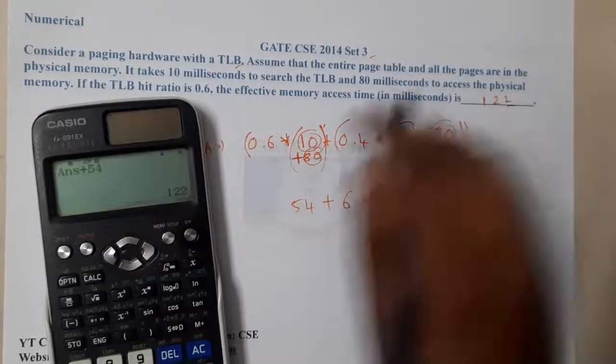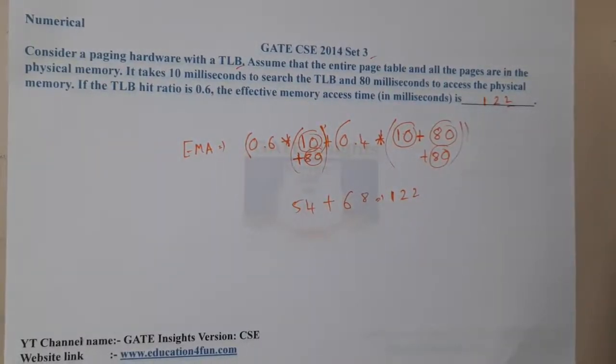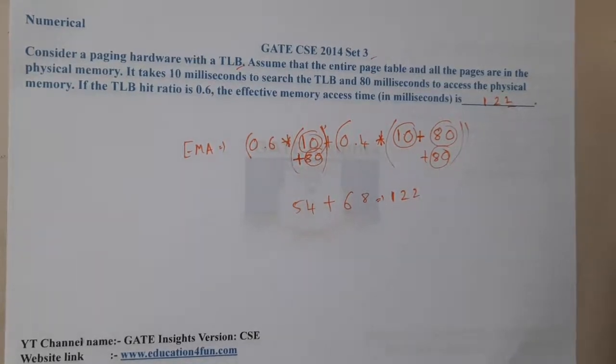The thing here is they did not say that there is a penalty, there is additional time, or exact time, but here they clearly give everything. They told that the TLB access takes 10 milliseconds and the memory access takes 80 milliseconds.